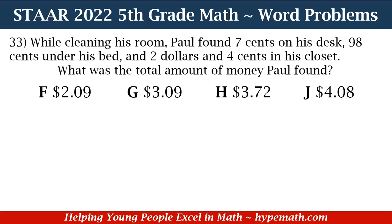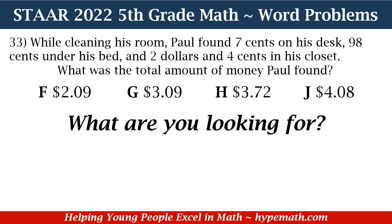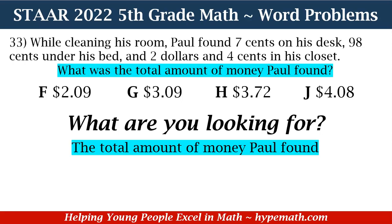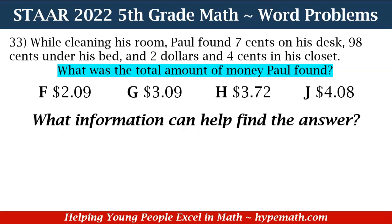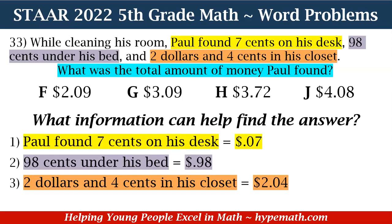In order to solve this problem, the first thing we need to do is ask ourselves: what are we looking for? We are looking for the total amount of money Paul found. Now that we know what we're looking for, our next question is: what information can help find the answer? There are a few things that can help. Number one, Paul found $0.07 on his desk. He found $0.98 under his bed. Lastly, he found $2.04 in his closet. We have converted those to decimal values: $0.07, $0.98, and $2.04.